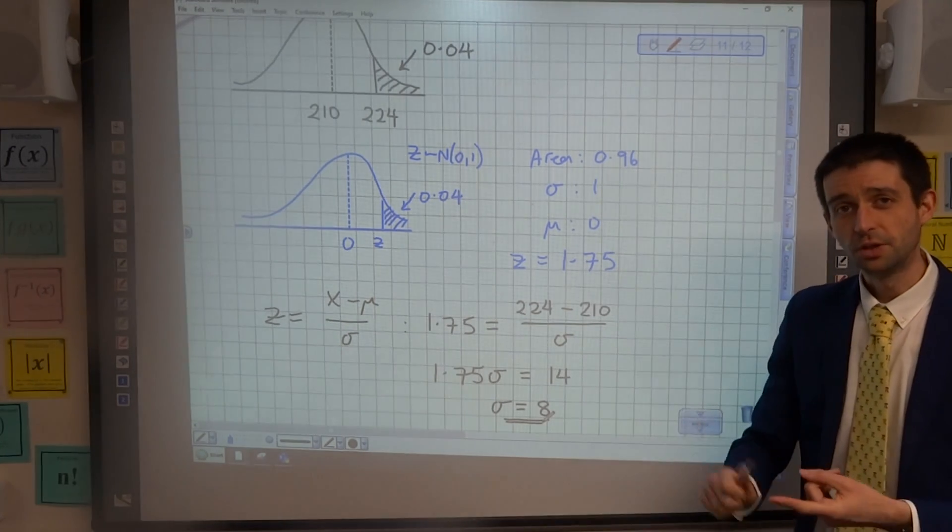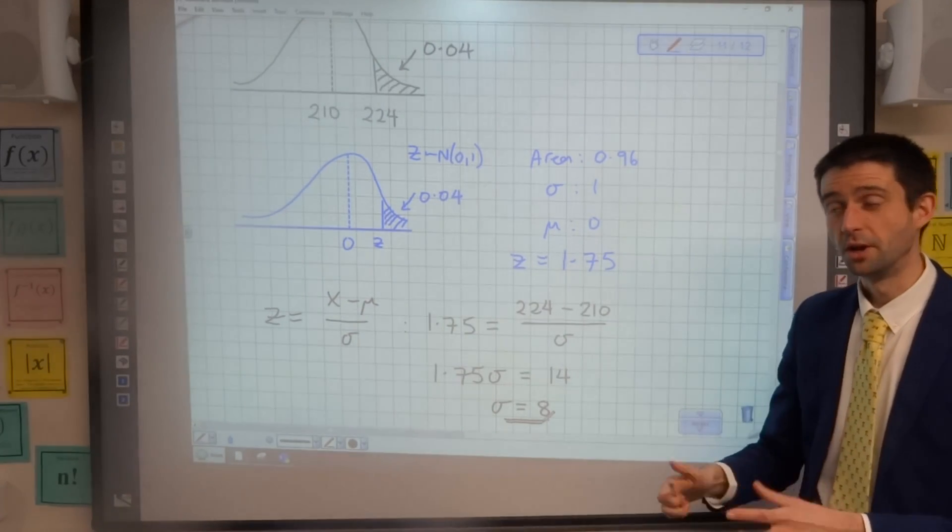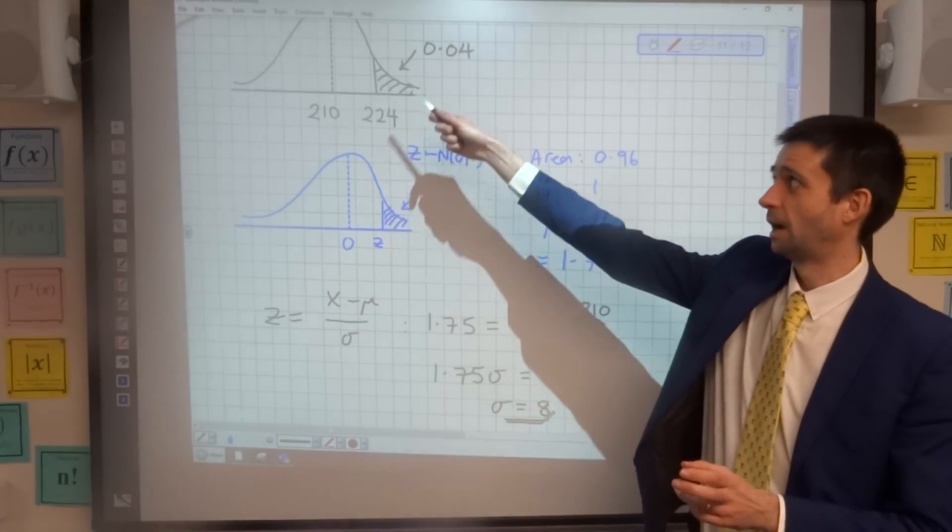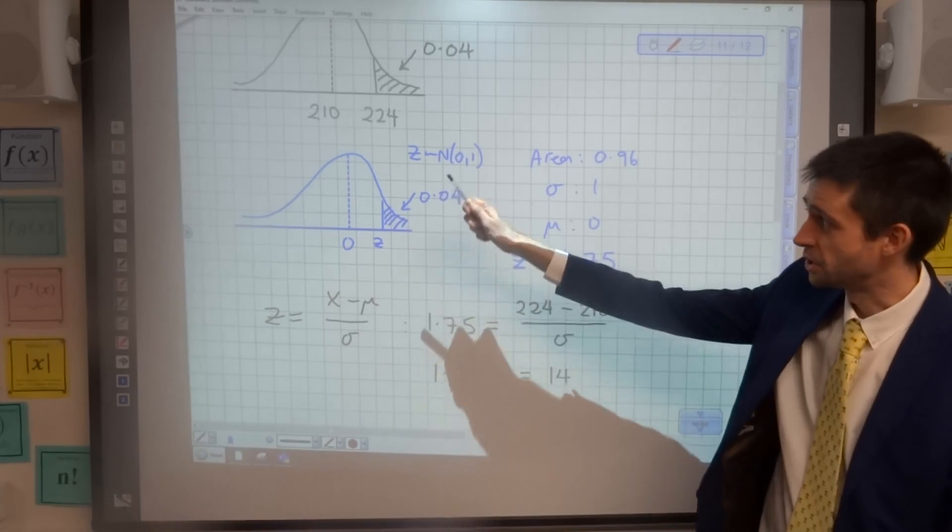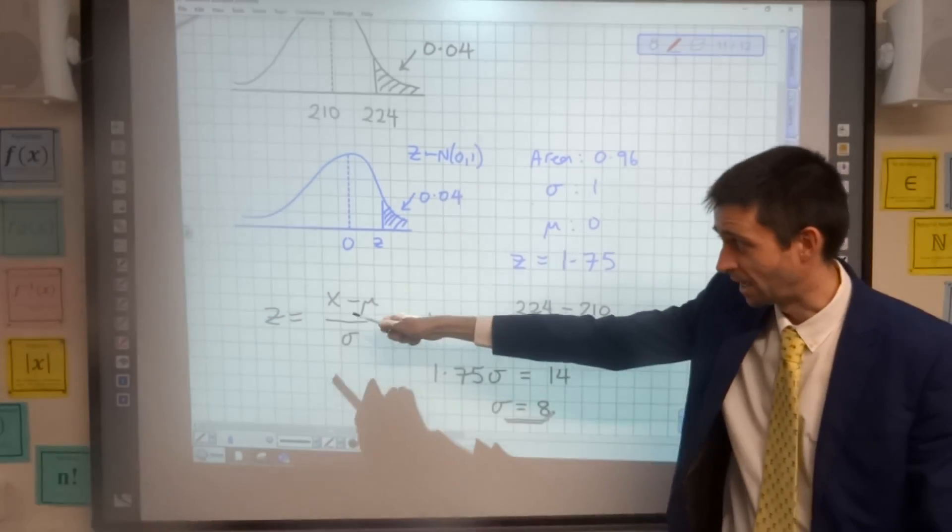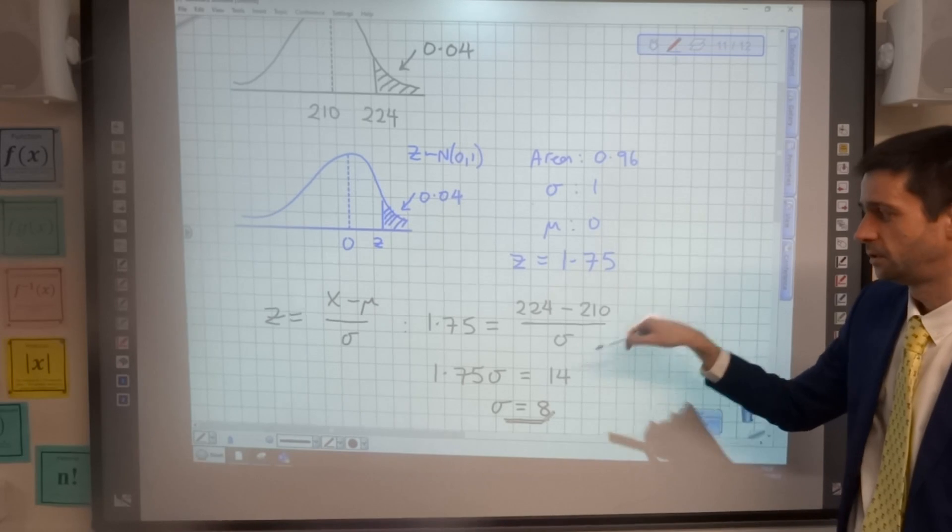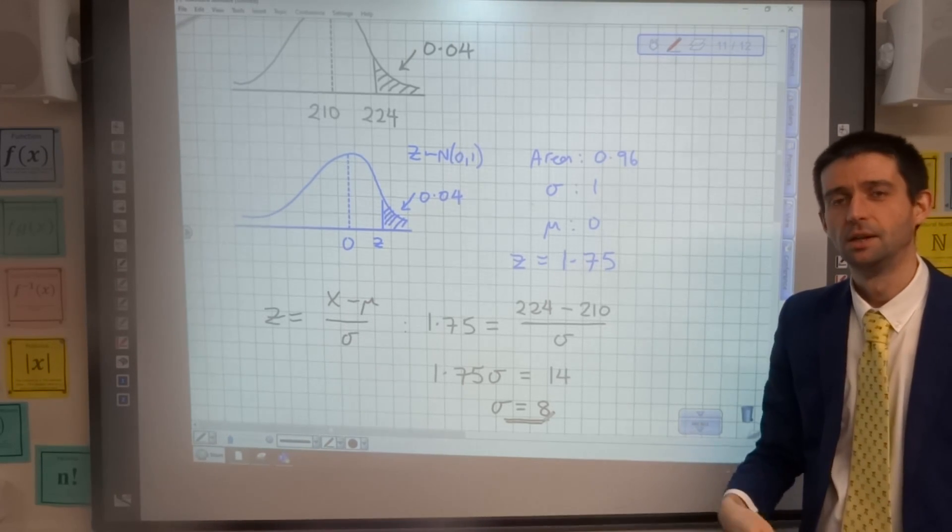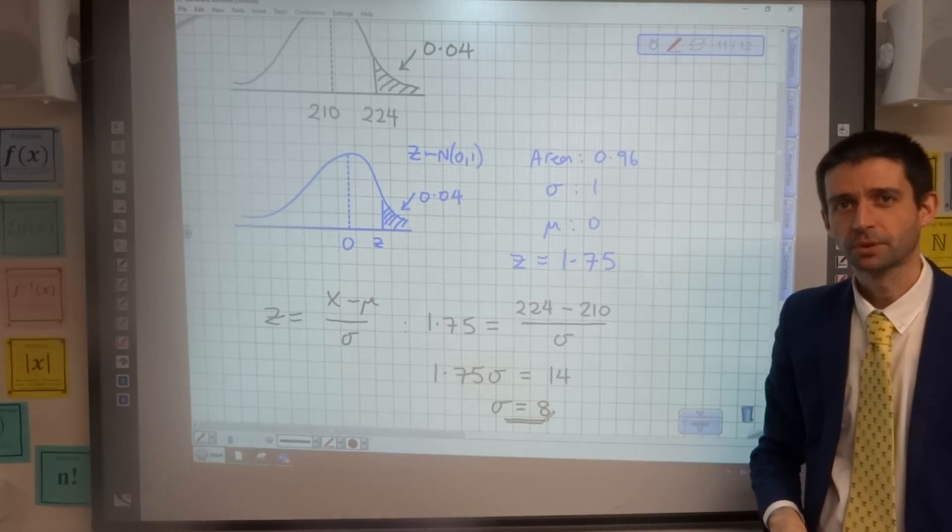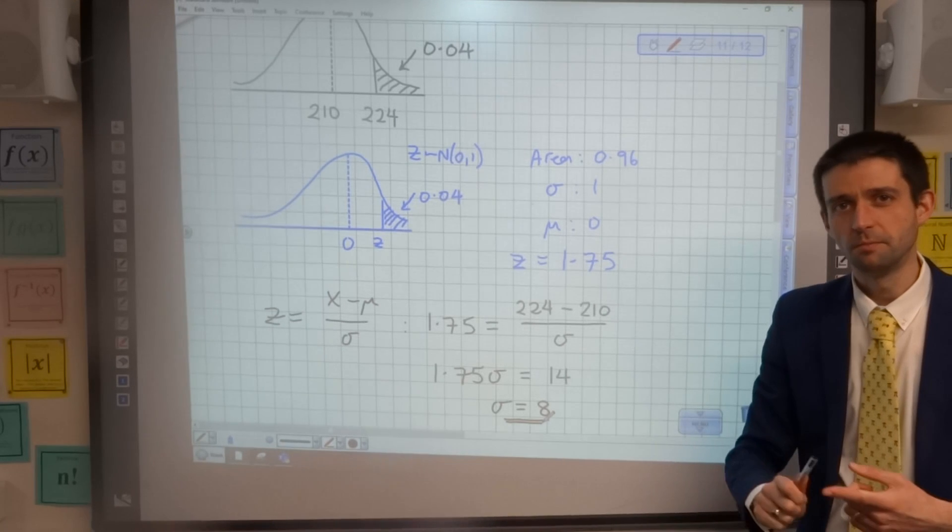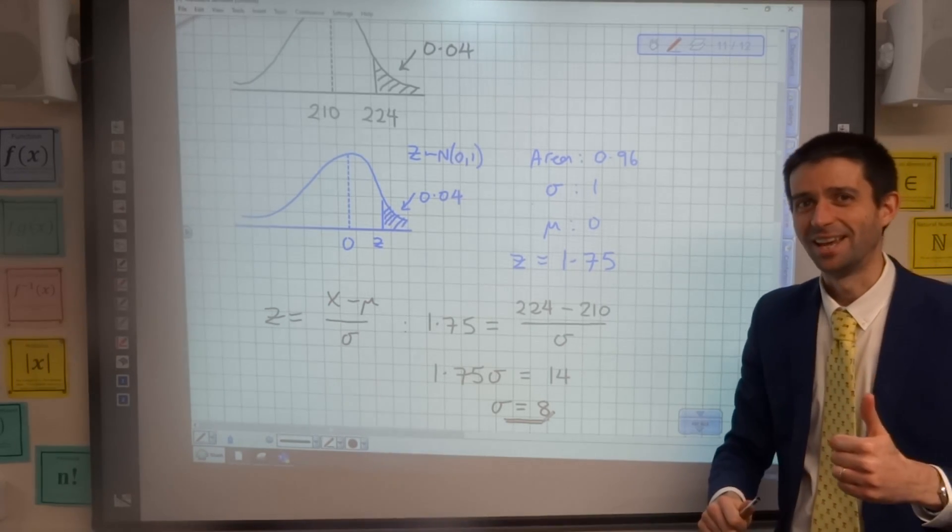Key point there, if you don't know the standard deviation or you don't know the mean, but you know a value and you know a probability, you can use the standardised normal distribution to get a Z value, which you can then solve to find out your unknown mean or your unknown standard deviation. Join me in the next video where we don't know the mean and we don't know the standard deviation. I'll see you there.